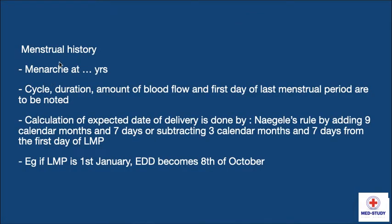Now coming to menstrual history, we have to know the age at menarche, the cycle, duration, amount of blood flow, and the first day of last menstrual period. We have to calculate the expected date of delivery using Naegele's rule by adding 9 months and 7 days, or subtracting 3 months and 7 days from the first day of last menstrual period. This gives a clue about term, preterm, or postterm delivery. For example, if LMP is 1st January, EDD becomes 8th October.